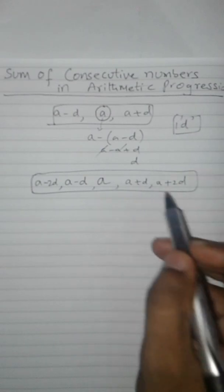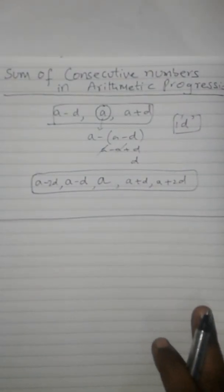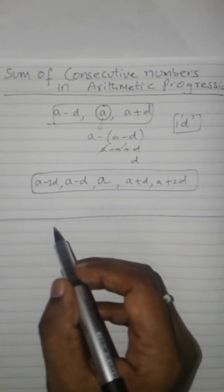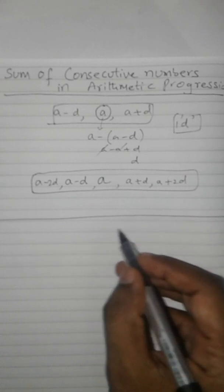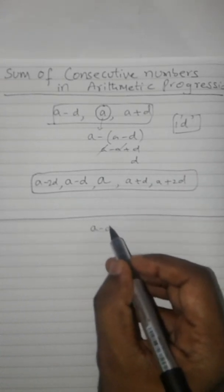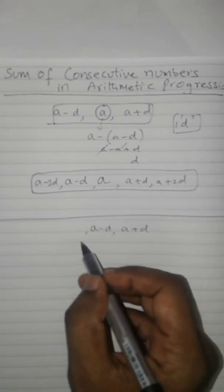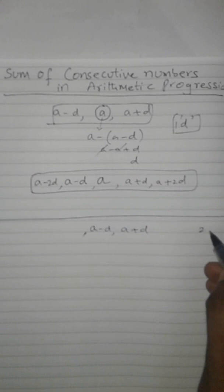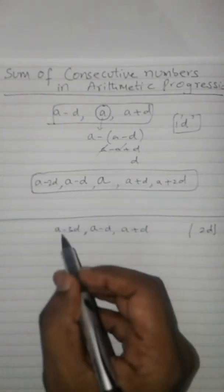Now, if they ask you for finding four terms of AP in succession, since 4 is an even number, remember in the middle it should have a minus d and a plus d. For even numbers, the difference should be 2d.